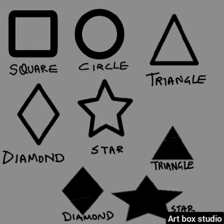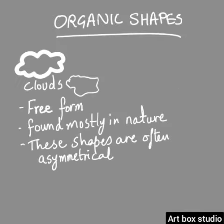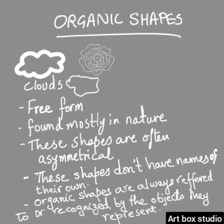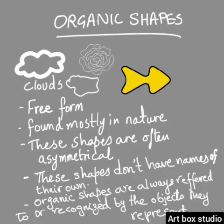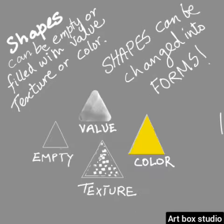All of these geometric shapes have names. Organic shapes, on the other hand, are freeform, mostly found in nature, and they are asymmetrical. These shapes don't have specific names — they are recognized by the objects or subjects they represent.